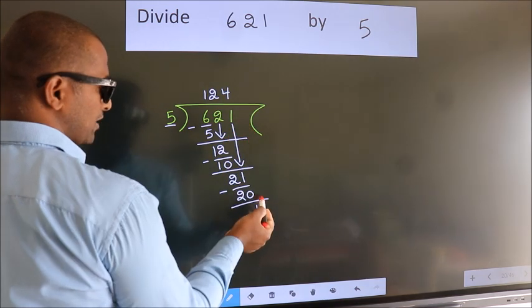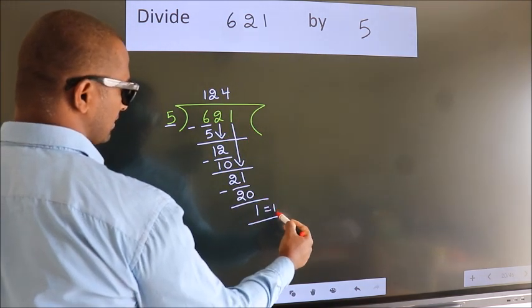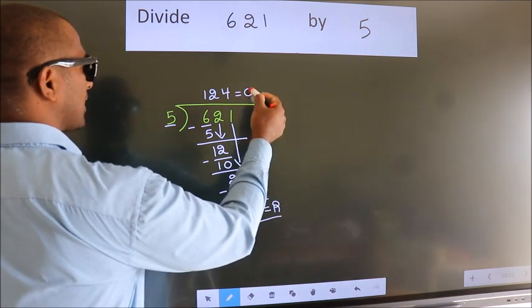No more numbers to bring it down. So we stop here. This is our remainder. This is our quotient.